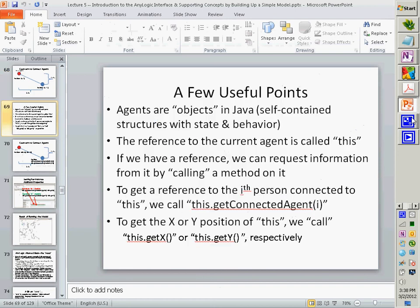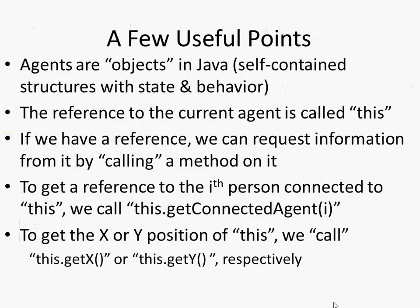Agents are objects, and to get a reference to the current agent I use the term 'this'. If we have a reference, we can request information from it by calling a method — a function. To get our neighbor, we ask: for myself (this), get my connected agent at index i. If index is 0, it's the first agent I'm connected to; if 1, the second; etc. Then to get the x or y position, we call getX() or getY().